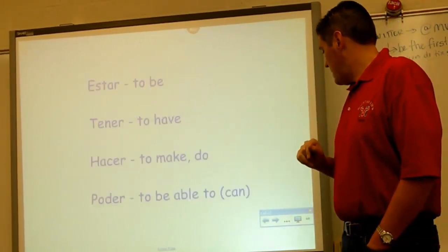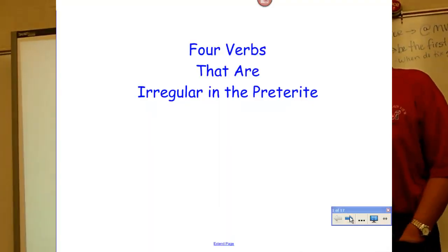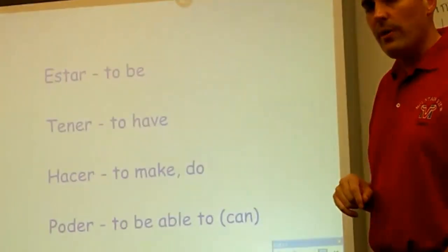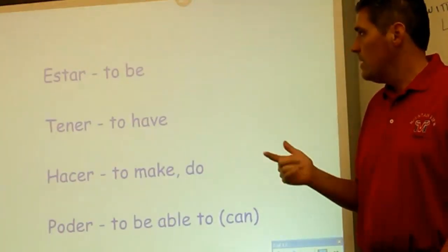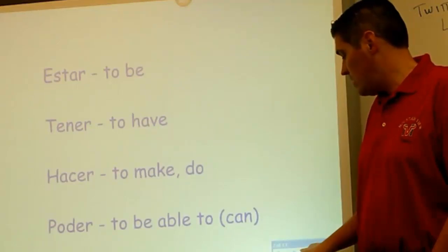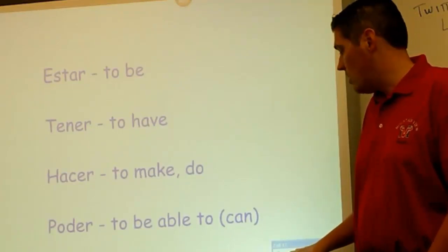There's good news and bad news to these. These four verbs are estar (to be) — you'll remember estoy, estás, está — tener (to have), hacer (to make or to do), and poder (to be able to, or can). You'll also remember that these are irregular in the present tense too. It seems there's a pattern between irregular in the present and irregular in the past — a couple of go verbs, a stem changer, and estar does its own thing with accents.